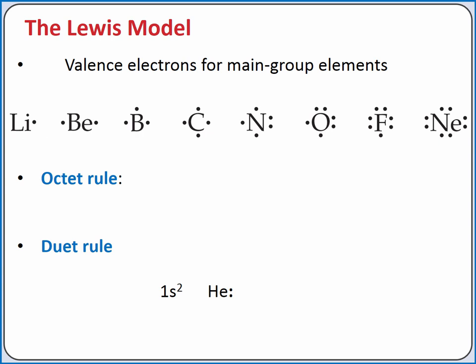When we discussed electron configurations, we said elements that do not have the electron configuration of the noble gas tend to either transfer or share electrons to obtain the electron configuration of their nearest noble gas. All noble gases have eight valence electrons, with the exception of helium. This gives rise to the octet rule.